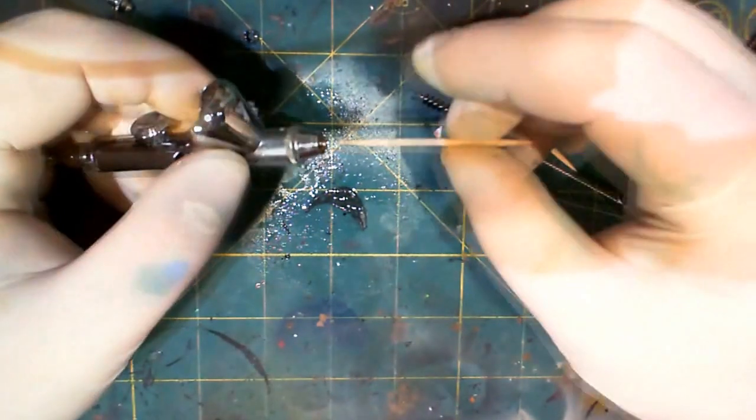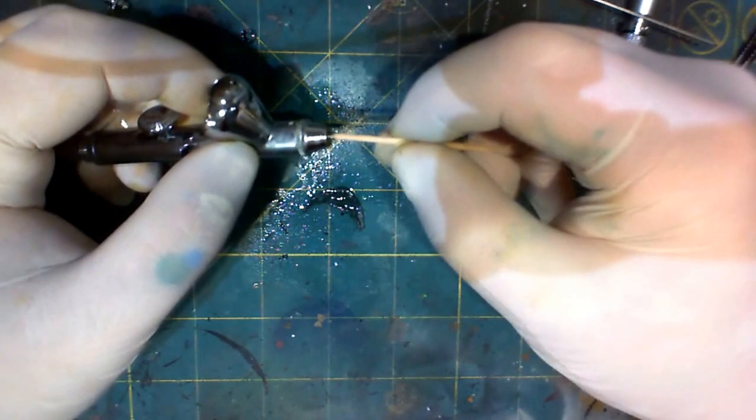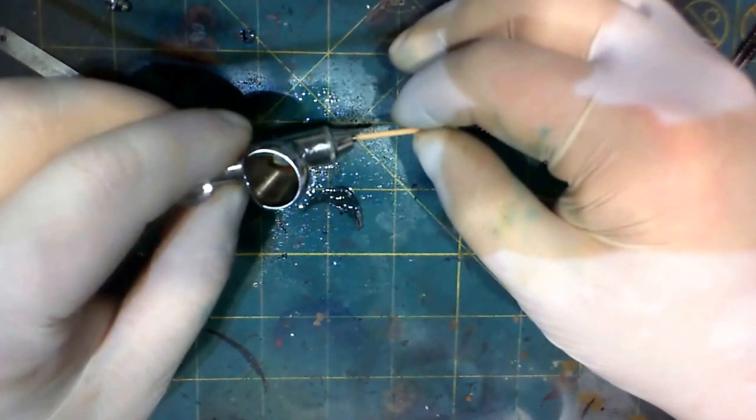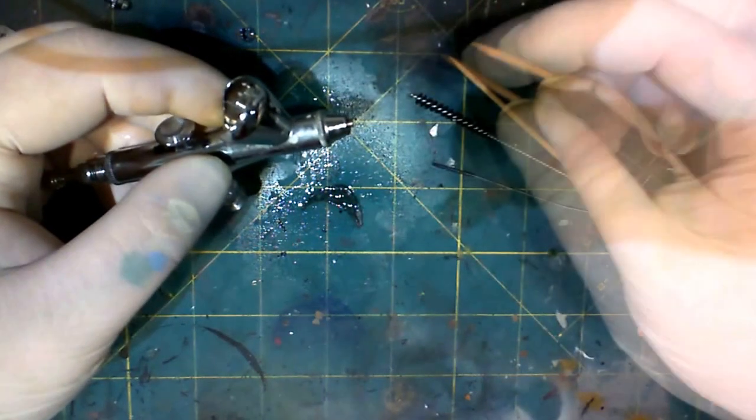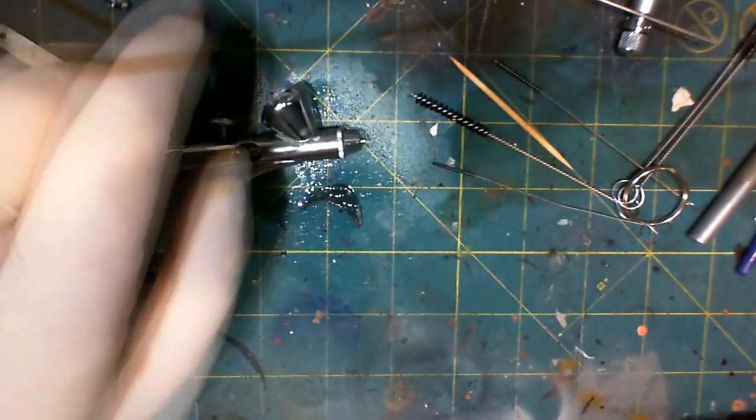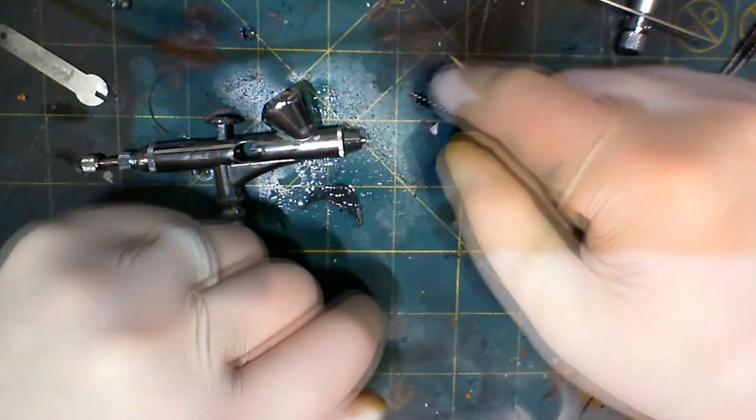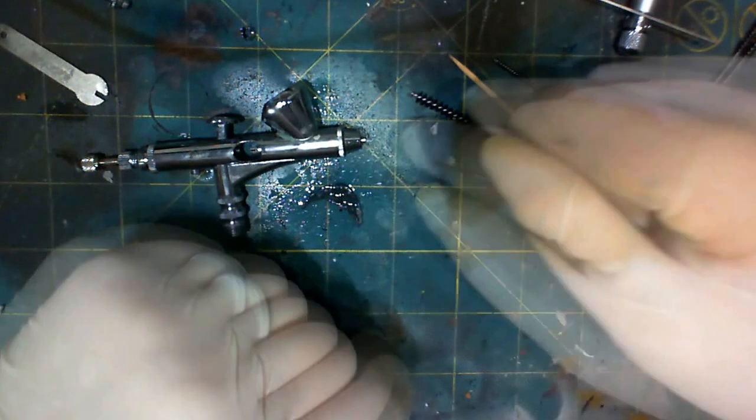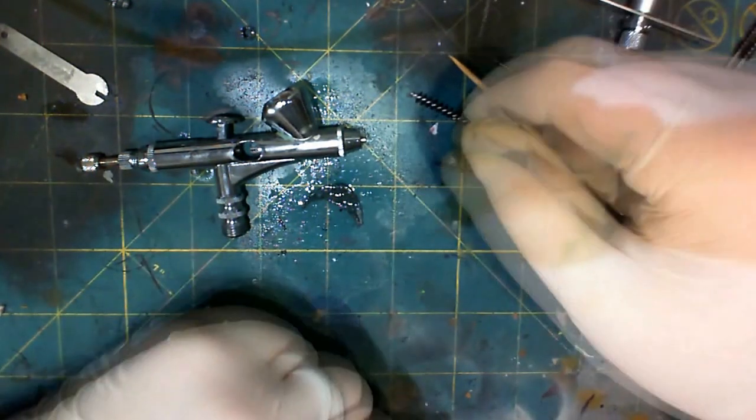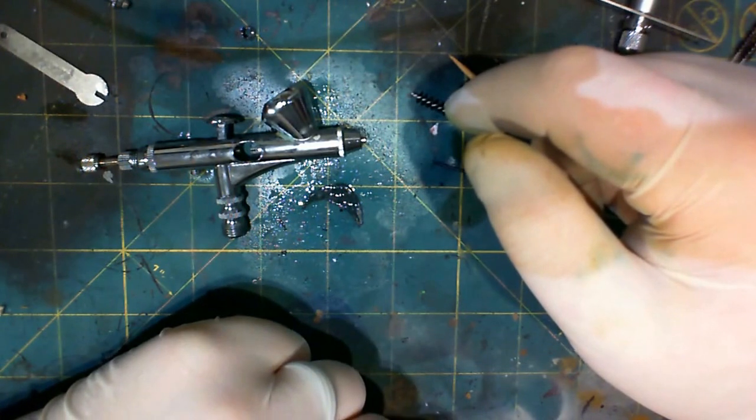Because the wood is really good at picking that up and it won't leave anything behind. Part of the problem with using the old style pipe cleaners is that they will leave little bits of fuzz back in your airbrush and clog the whole thing up. And it's just, it's awful and you don't want that to happen.